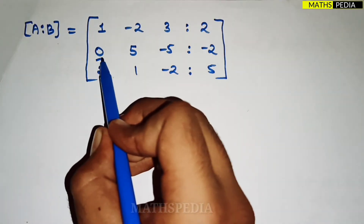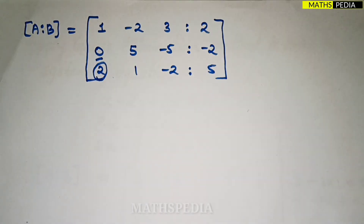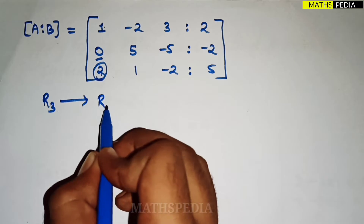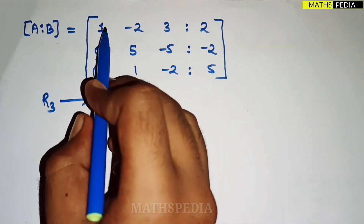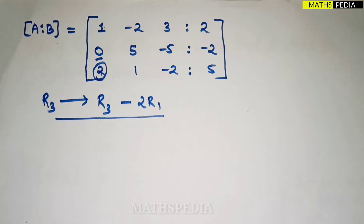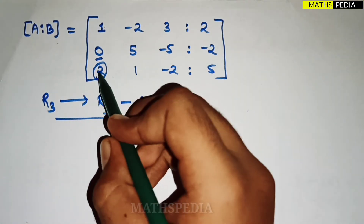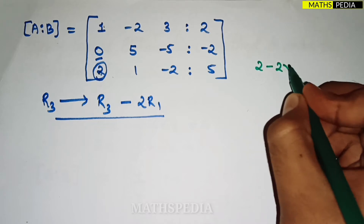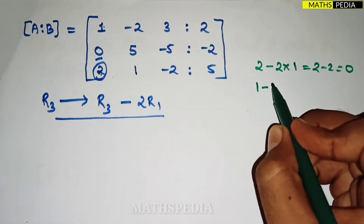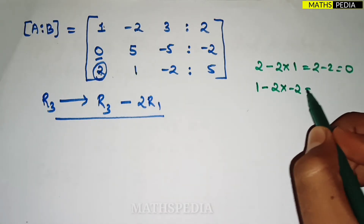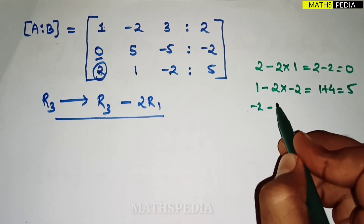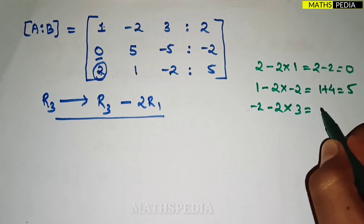Next, to make 2 (in row 3) zero, we apply R3 = R3 − 2×R1. 2 minus 2×1 = 0. Next: 1 minus 2×(minus 2) = 1 plus 4 = 5. Then: minus 2 minus 2×3 = minus 2 minus 6 = minus 8.